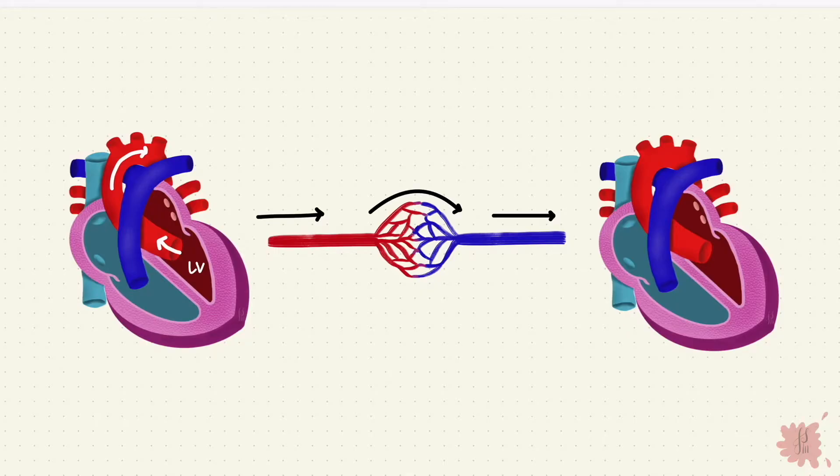the arterioles, and all the other vessels, the pressure reduces until it reaches the right atrium, which has the lowest pressure. The pressure gradient between the arteries and the veins is what guides flow.